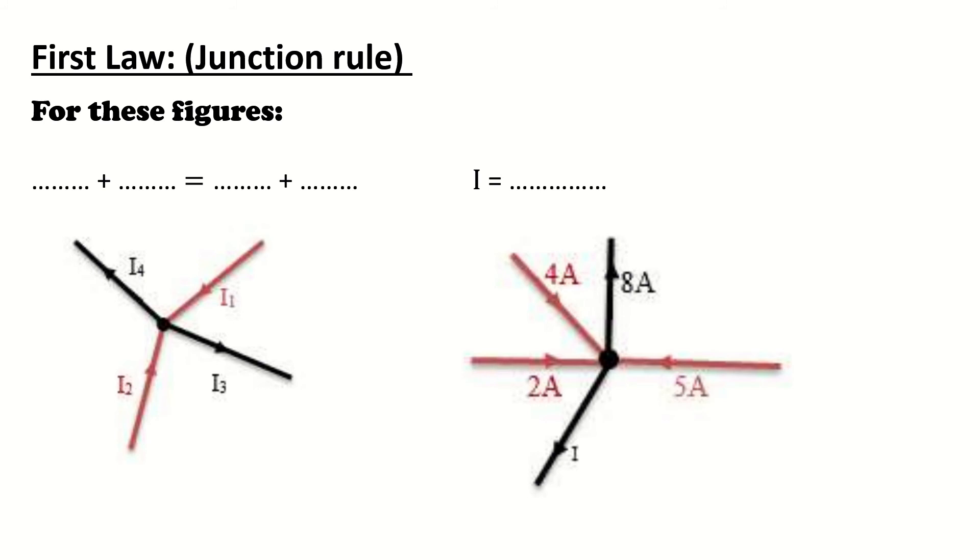For these figures, on the left side, you can see that these two currents exit or leave the node or the junction, while I1 and I2 enter it. So, I1 plus I2 must equal I3 plus I4.